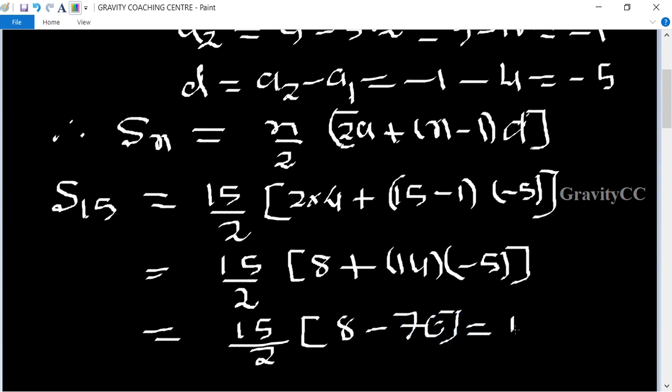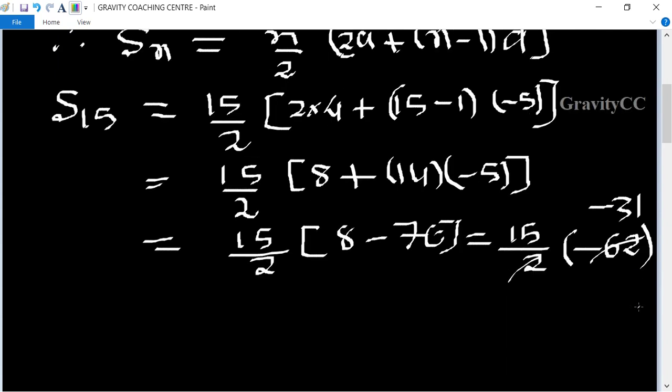Equals 15 by 2 times minus 62. Since 62 divided by 2 equals 31, this equals 15 times minus 31 equals minus 465, which is the required answer.